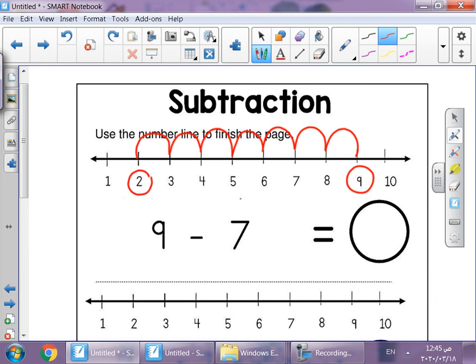We get 2. So, 9 minus 7 equals 2. The answer is 2.